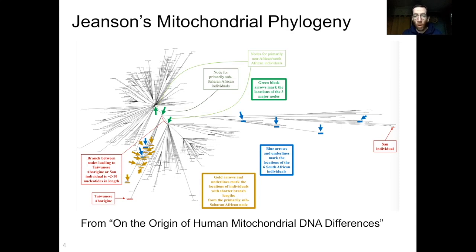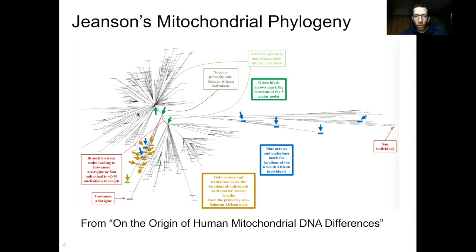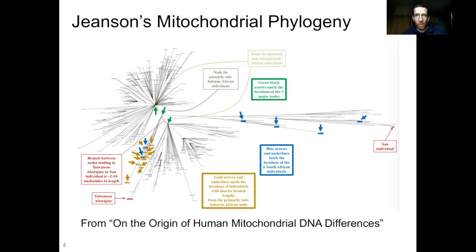So this is Jeanssen's mitochondrial phylogeny. This is from a blog post on AIG called 'On the Origin of Human Mitochondrial DNA Differences,' from around 2016, building on similar work from 2015. There's a lot going on here, but the important thing are these three arrows in green — one right here, one right in the middle, and one right here. These three nodes represent the three epicenters of mitochondrial diversity, with lots of descendants from each. Jeanssen claims those three nodes represent the three wives of Noah's sons from which all extant mitochondrial lineages are descended.